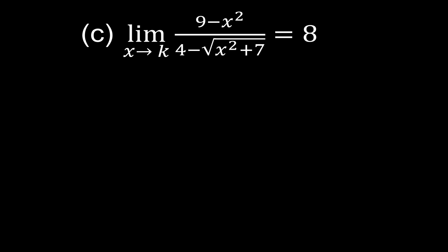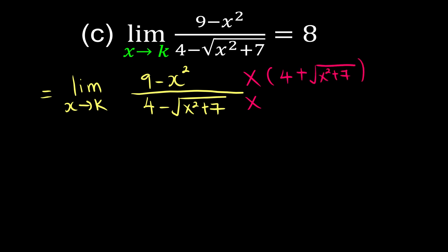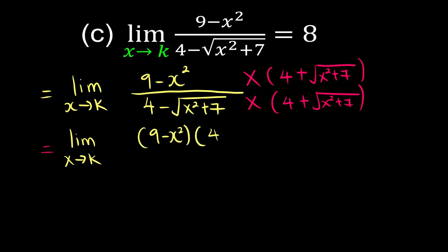For the next part, when x approaches k, we rationalize first using the conjugate. When we have a minus, the conjugate is a plus. So we multiply by (4 plus square root of x squared plus 7) on both numerator and denominator. Then we simplify the limit of x approaches k — don't worry about k just yet, we'll settle it later.